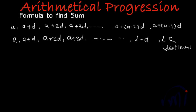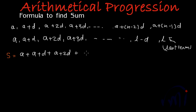Now, we are planning to find the sum of the series. If I write S as the sum of this series, it can be written as S equals A plus (A plus D) plus (A plus 2D) plus (A plus 3D) plus ... plus (L minus D) plus L — the last term and its previous term. So this will be the sum of this series.